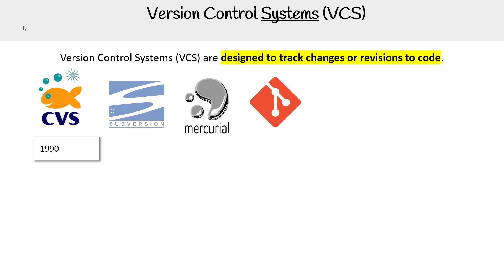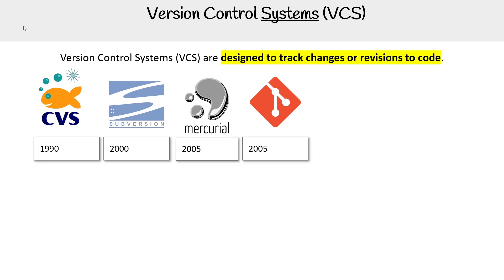A version control system makes it really easy to not worry about losing floppies or CDs or drives, because they keep track of all the history. Then came Subversion in 2000. But the real game changer was in 2005, when we were introduced to a new type of version control system — and we had Mercurial and Git. The key difference between the old ones and the new ones was the old ones were centralized and the new ones were decentralized.